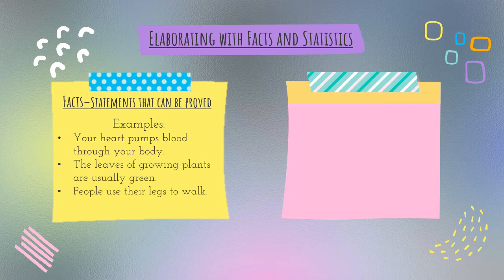Go outside, look at somebody walking around, look at your brother or sister as they walk by — yeah, they're using their legs. Some people keep dogs as pets. I had a dog for a short amount of time. It's something that you can clearly see. You can clearly prove that there are dogs and people have them as their pets.